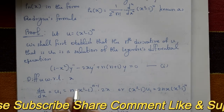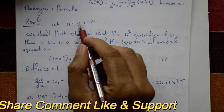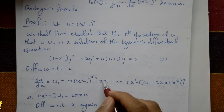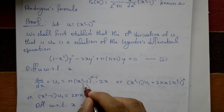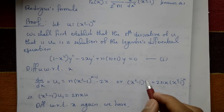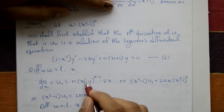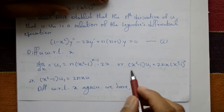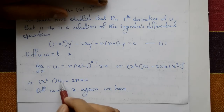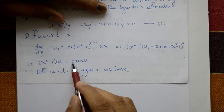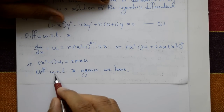Now differentiate u with respect to x. du/dx, called u₁, equals n(x² - 1)^(n-1) · 2x. Rearranging, multiply (x² - 1) into u₁: (x² - 1)·u₁ = 2nx·(x² - 1)^n, which equals 2nx·u.